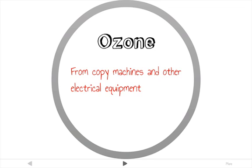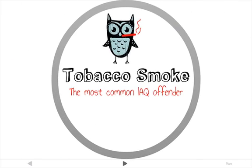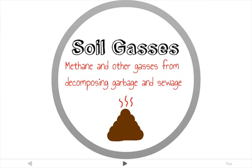Ozone can come from copy machines, electrostatic air cleaners, or high voltage electric equipment, and it can be prevented with proper ventilation. Tobacco smoke is the most common indoor air pollutant. Soil gases include methane and other gases released by decomposing garbage in landfills or leaking sewage lines that can be both toxic and explosive.